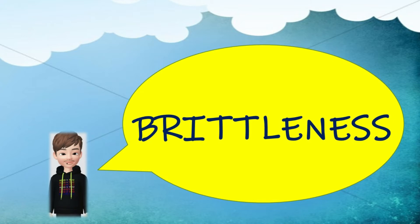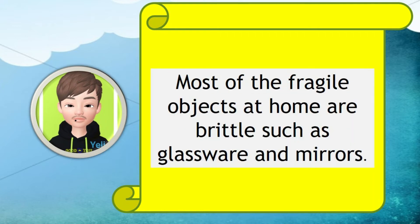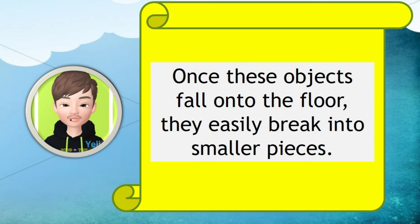Brittleness. Brittleness refers to the ability of an object to be easily broken or crushed into pieces. Most of the fragile objects at home are brittle, such as glassware. Once these objects fall onto the floor, they easily break into smaller pieces.